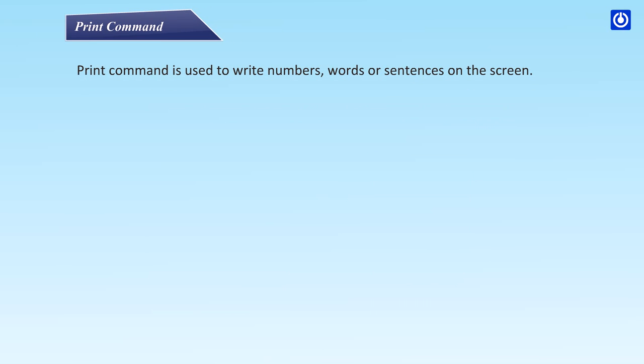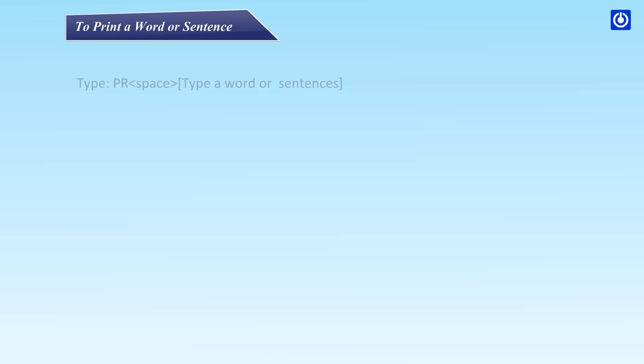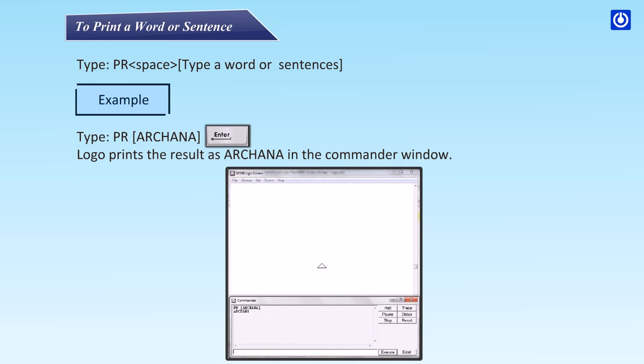The Print command is used to write numbers, words, or sentences on the screen. To print a word or sentence, type PR followed by the word or sentence. For example, type PR Archana — Logo prints the result as 'Archana' in the commander window.